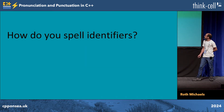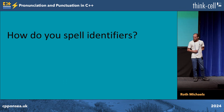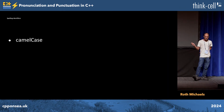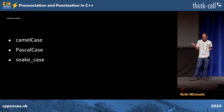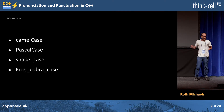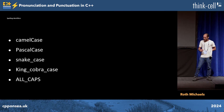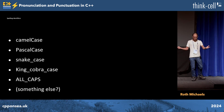Just to start some conversation: how do you spell your identifiers? Raise your hand if you use one of these styles in your code base — maybe you use them all. Camel case? Pascal case? Snake case? Lots of hands going up for everything. I don't know if there's a name for this — I decided today to call it King Cobra case. All caps? Something else?